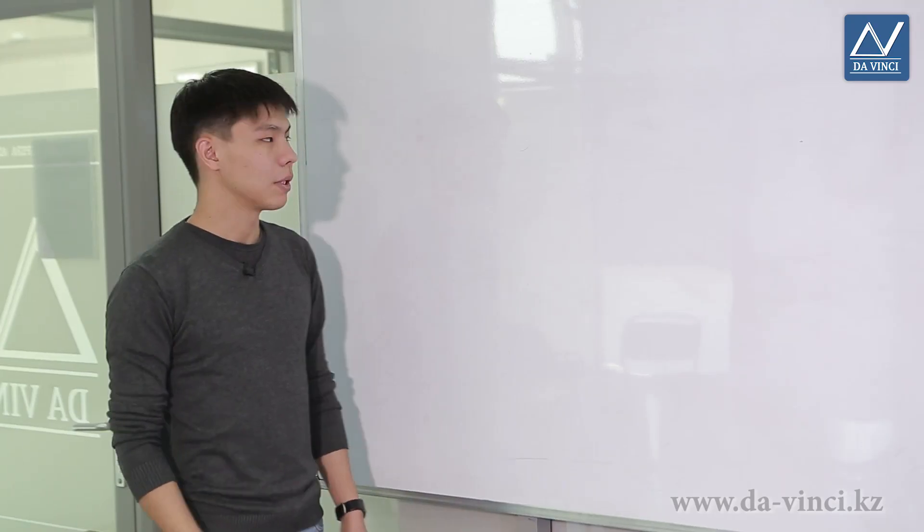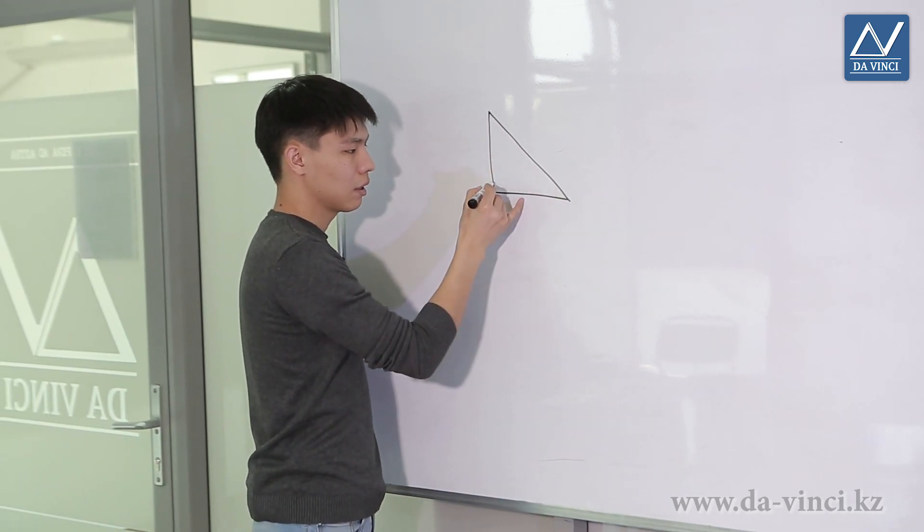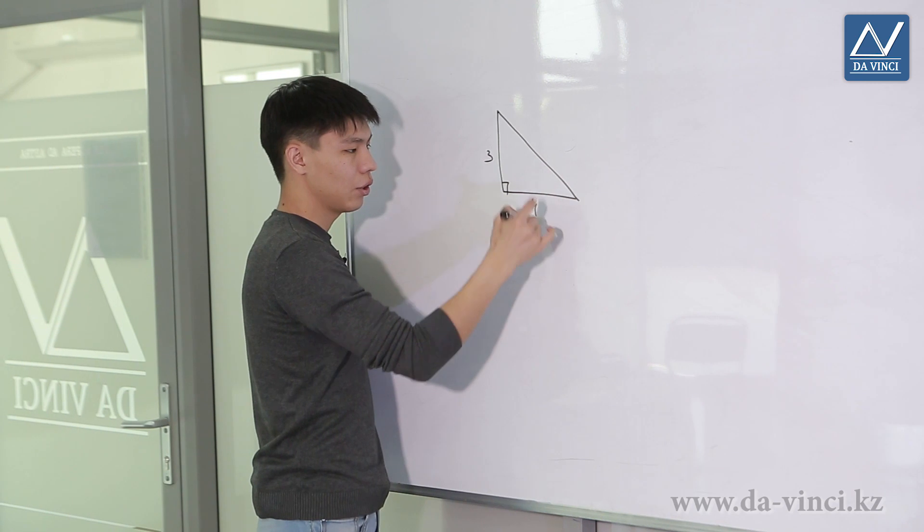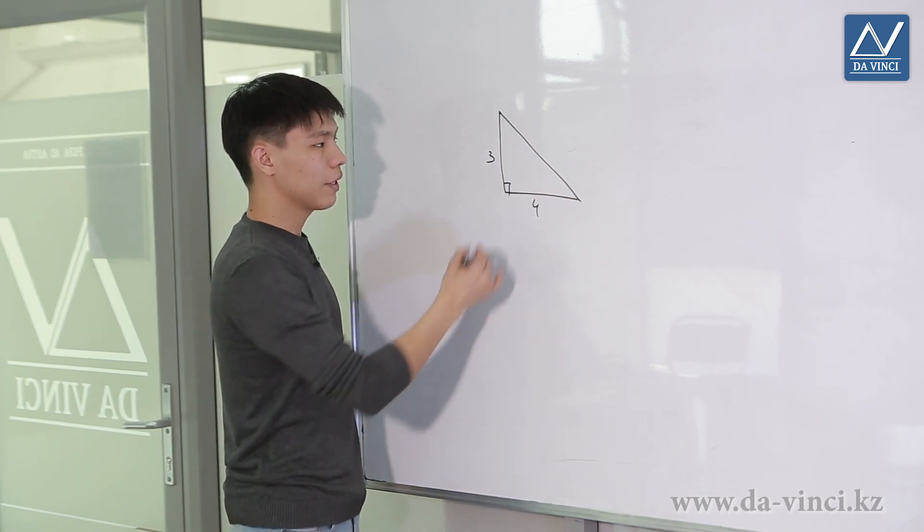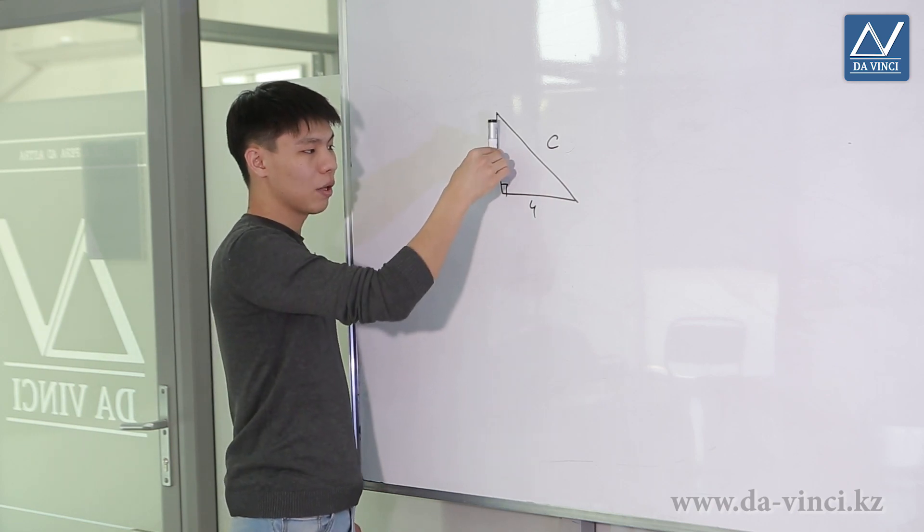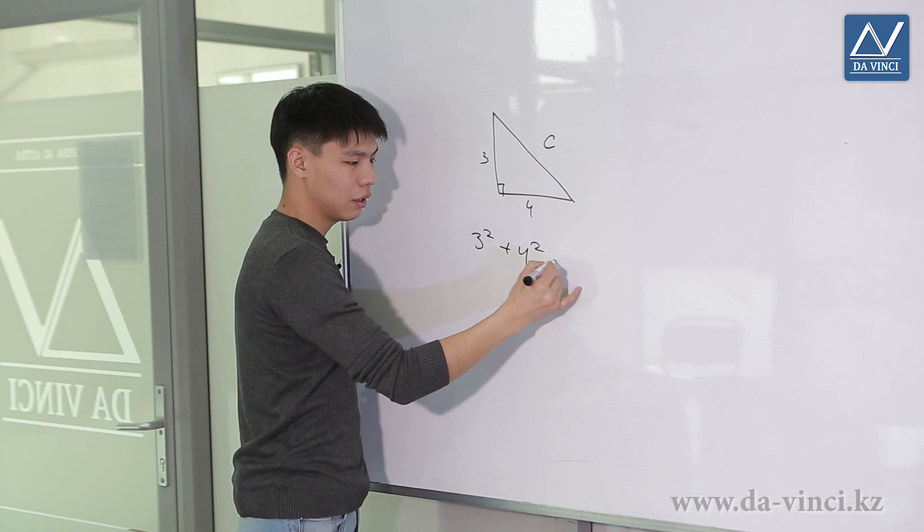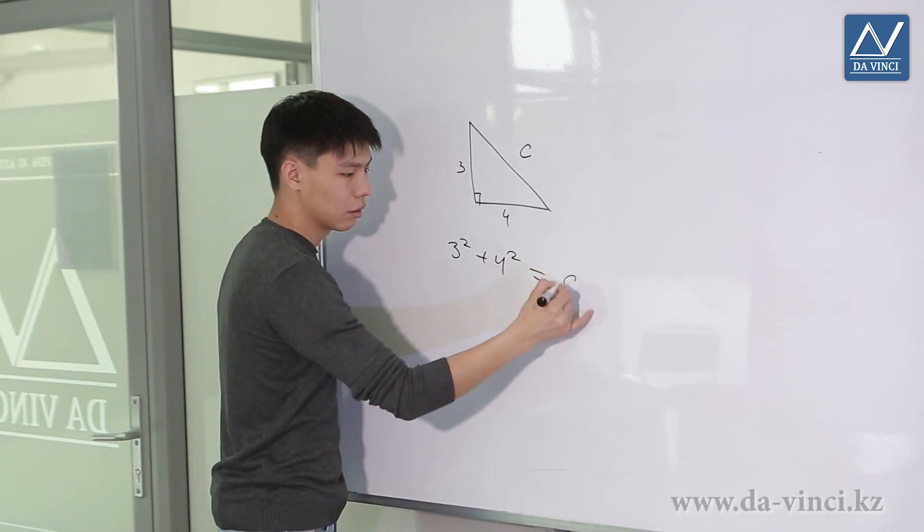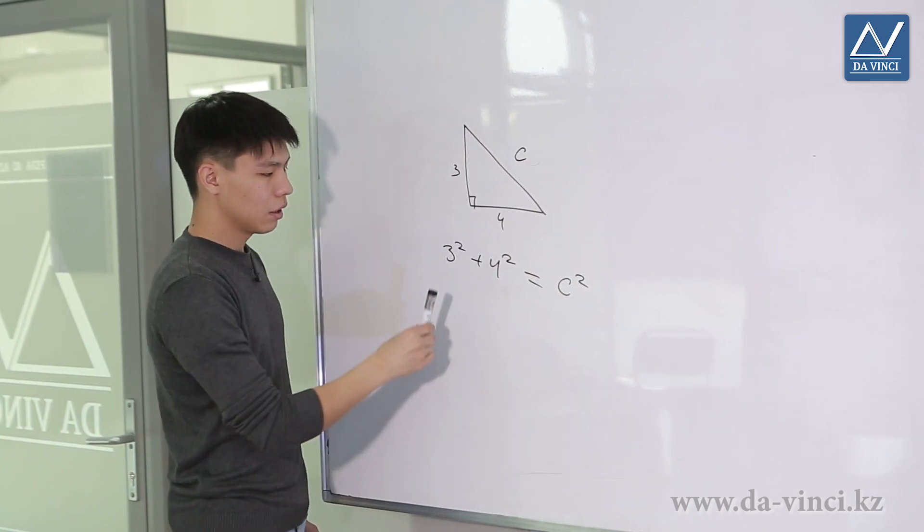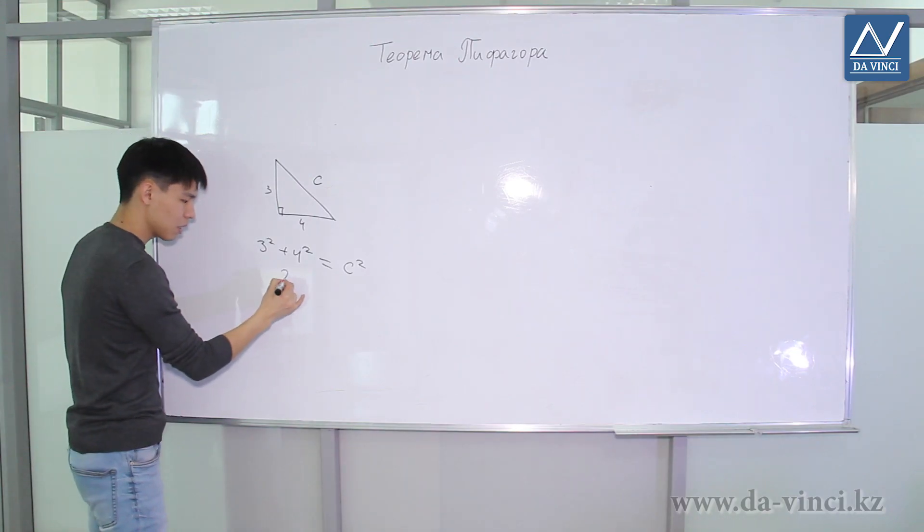Let's take a look at one example. Let's say we have a right triangle with legs 3 and 4, and we need to find its hypotenuse. Let's mark the hypotenuse as C and use the Pythagorean theorem, the sum of the squares of the legs. So 3 squared plus 4 squared equals the square of the hypotenuse, which is C squared. Let's calculate it. 3 squared is 9, 4 squared is 16. In total, 25.